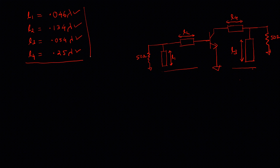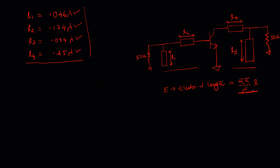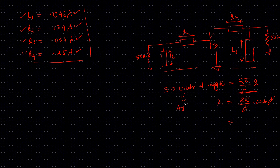In Serenade, to use transmission line stubs we need to define the value of E, which is the electrical length. Electrical length is defined as 2π divided by lambda, multiplied by L, where L is the physical length. We have already found the value for L. The unit of electrical length is an angle — it can be in radians or degrees. In Serenade, we generally use degrees.